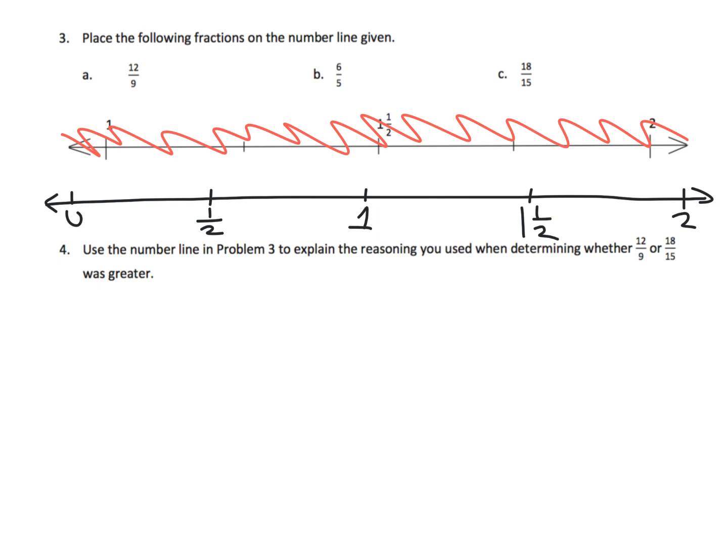And if I were to do 12 ninths, I'd say, well, that's 9 ninths plus 3 ninths, so that's 1 and 3 ninths. So I know that's going to be larger than 1. And half of 9 is 4.5 or 4 and a half. So if you think about it, 12 ninths is close to 1 and a half, but it's got to be less than 1 and a half. So I'd put it right around there.